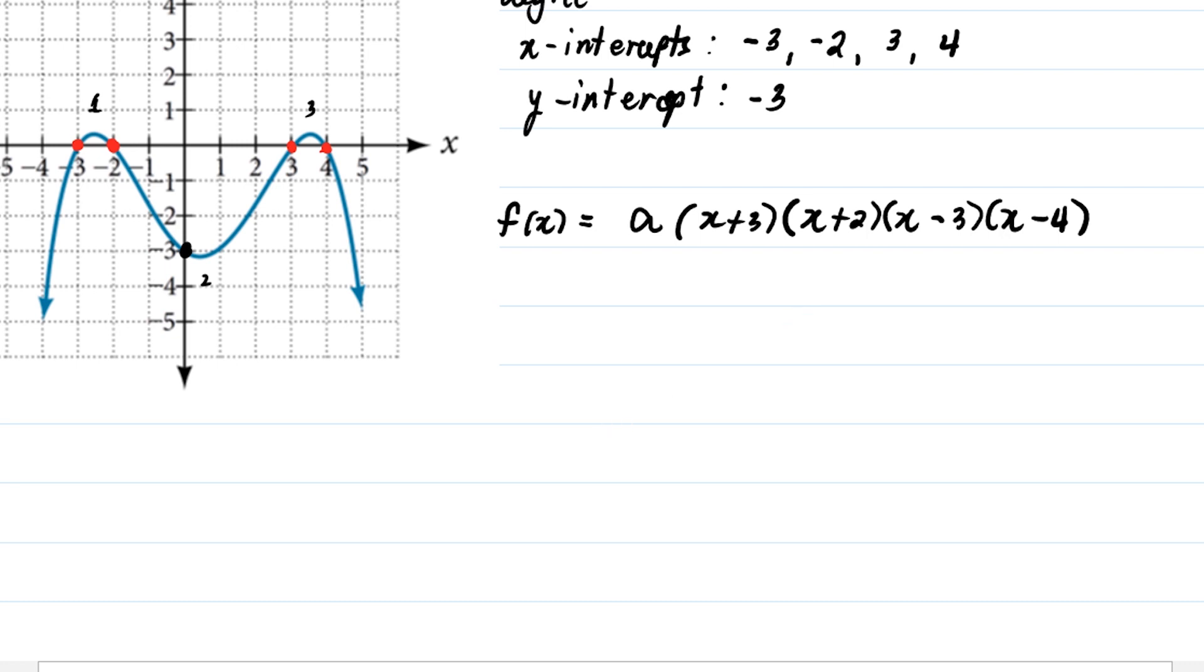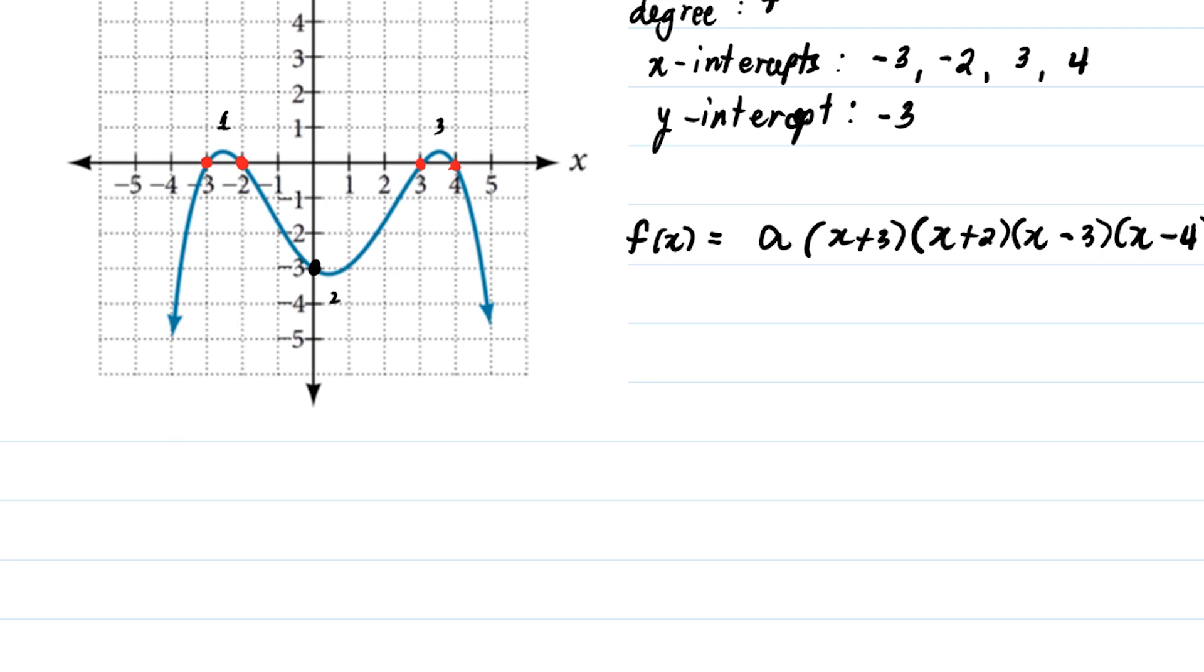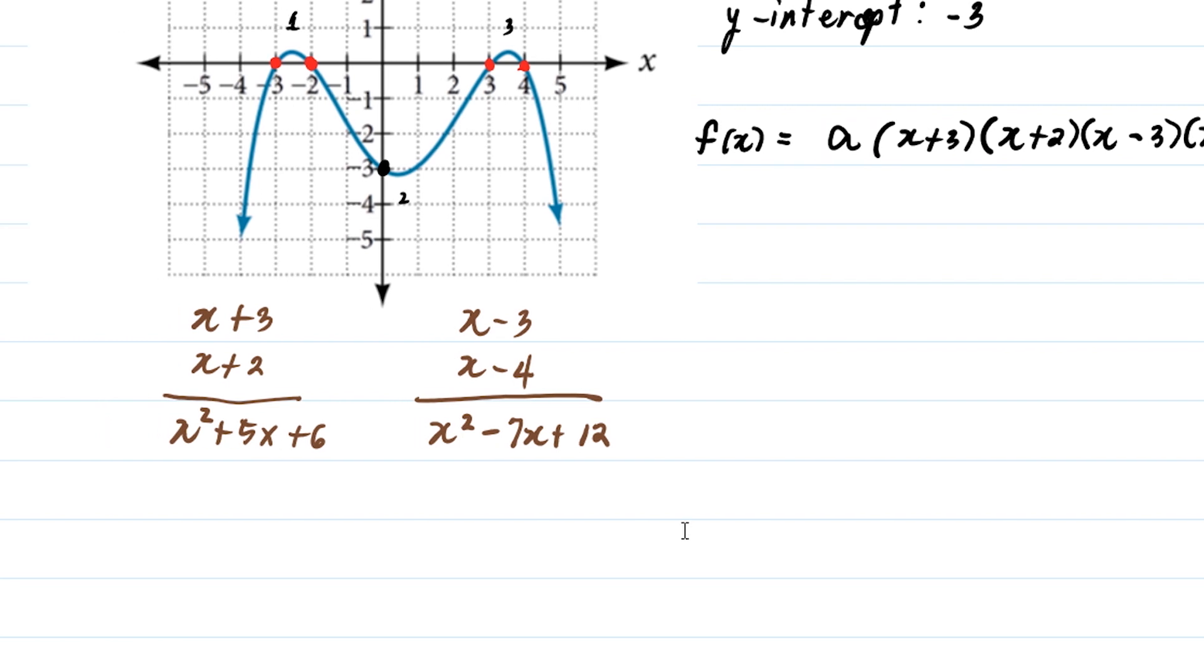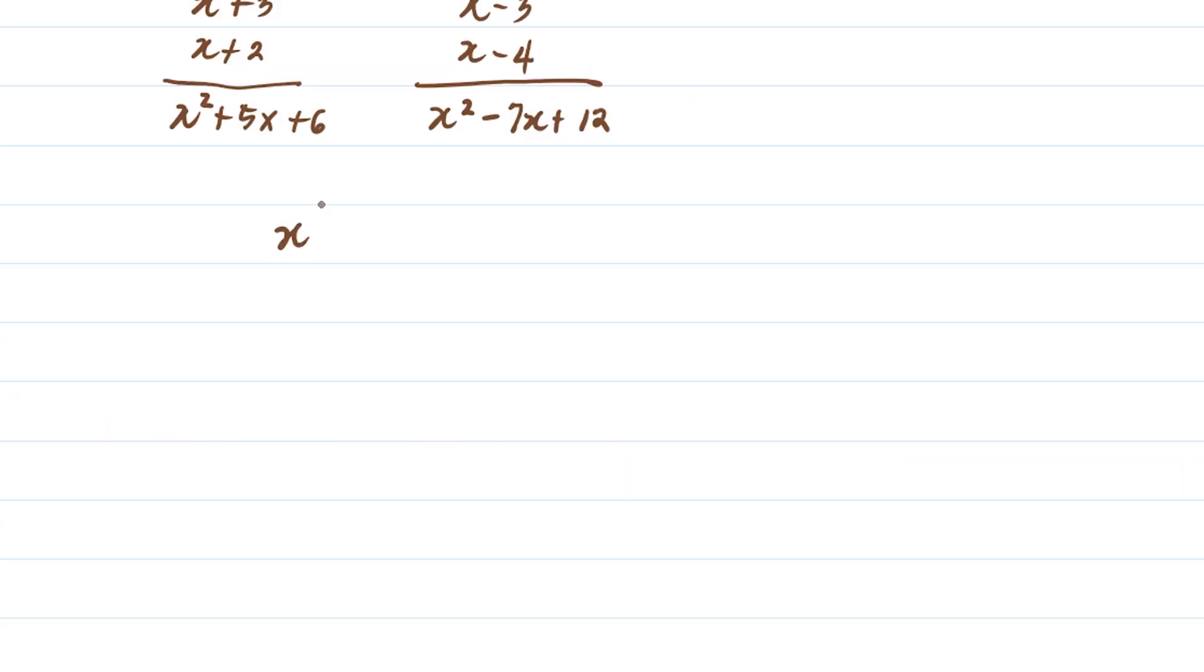Let's have a scratch work here. Let's multiply x plus 3 and x plus 2. That will give us x squared plus 5x plus 6. Then, let's multiply x minus 3 times x minus 4. That will give us x squared minus 7x plus 12. Now, all we have to do is to multiply these two trinomials.